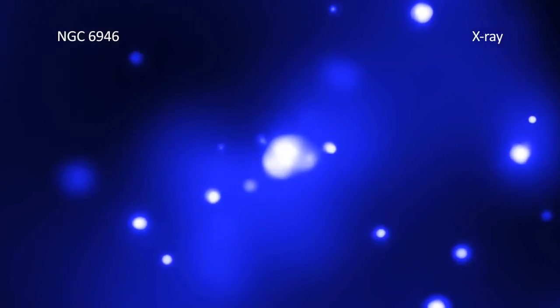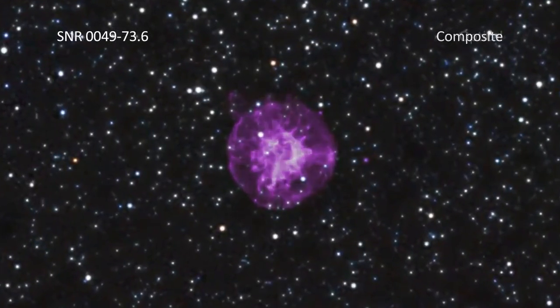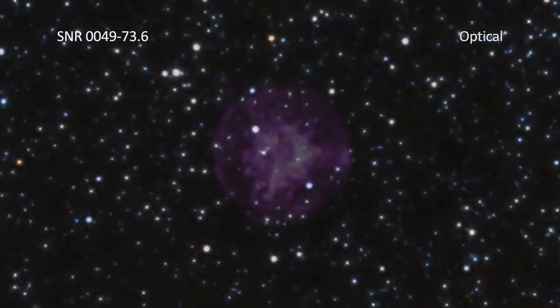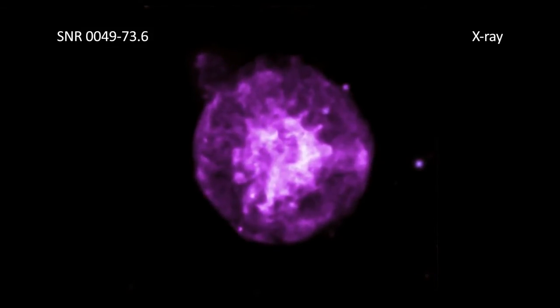These images, including supernova remnants, stellar nurseries, and galaxies, represent the observations of thousands of objects that are permanently available to the world thanks to Chandra's archive.